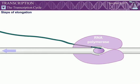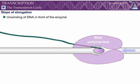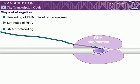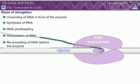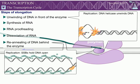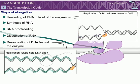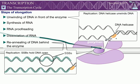During elongation, RNA polymerase unwinds the DNA in front of the enzyme, synthesizes RNA, proofreads RNA, dissociates RNA from the DNA, and re-anneals the DNA behind the enzyme. In contrast with DNA polymerase, RNA polymerase is able to perform these functions without the assistance of other proteins.